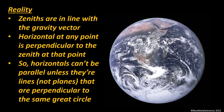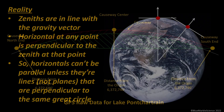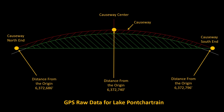Here's reality. Zeniths are in line with the gravity vector. When I say zenith, I simply mean a point directly above you. Horizontal at any point is tangent to some elevation and is perpendicular to a zenith at that point. So horizontals can never be parallel. The only way that could work is horizontals which are perpendicular to great circles — for instance, a line of longitude or the equator. Jesse Kozlowski and Soundly showed that at Lake Pontchartrain, and Jesse and Larry Scott have shown how zeniths diverge.